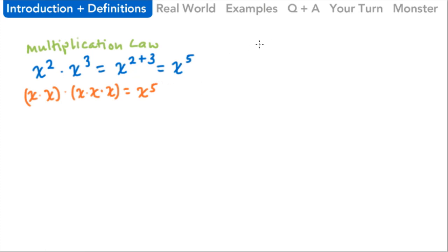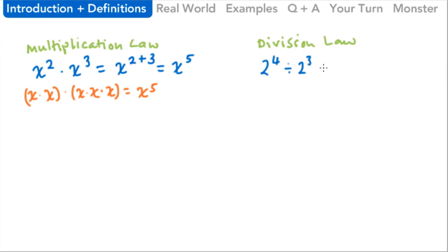However, when we are dealing with the division law of exponents, what we need to do is subtract the exponents. So let's take a look. If we've got two to the fourth power and we are dividing by two to the third power, the law tells us we need to subtract the exponents — specifically, we subtract the second exponent from the first. So this gives us two to the first power, which is just two.